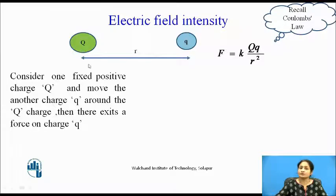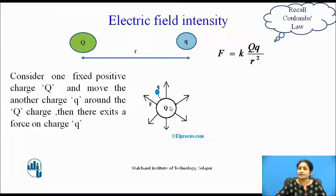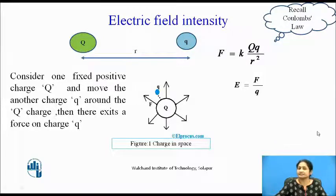Consider one fixed positive charge Q, and we will move this small q charge in the field of capital Q. The arrows are representing the electric field across this region. When we move another charge Q in this field, then it experiences a force. This charge experiences a force due to this point charge Q, and that force is given by Coulomb's law. The electric field intensity due to this point charge Q is given by the force experienced by that charge — that is, force per unit charge.